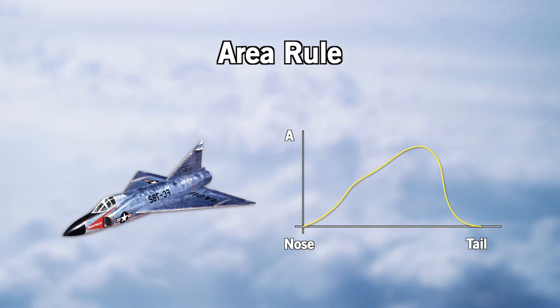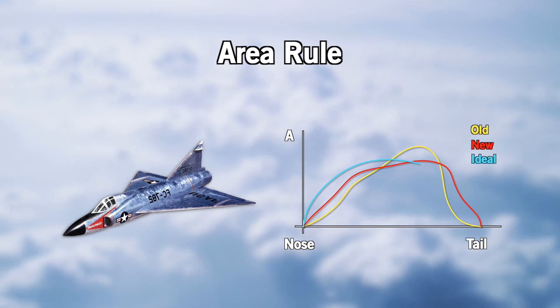By reducing the size of the fuselage where it meets the wing, just like a coke bottle, the change in cross-sectional area was smoothed out, getting closer to the ideal shape and allowing the fighter to break the sound barrier.